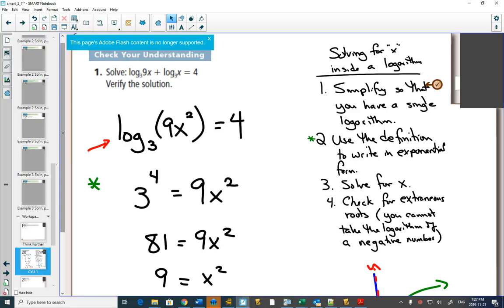Last thing it says is verify the solution. If you plugged in 3, log₃ of 27 plus log₃ of 3. 3 cubed is 27, so this will be 3. 3 to the 1 is 3, so that will be 1. 3 plus 1 is 4. It works. So verifying would just be plugging in your numbers, checking if the left-hand side equals the right-hand side.